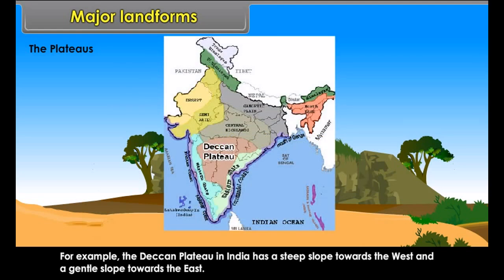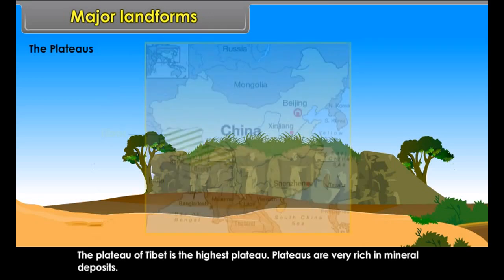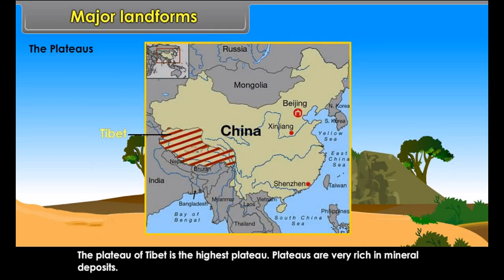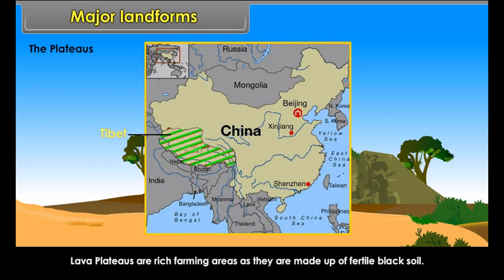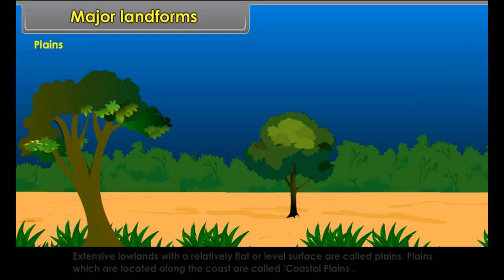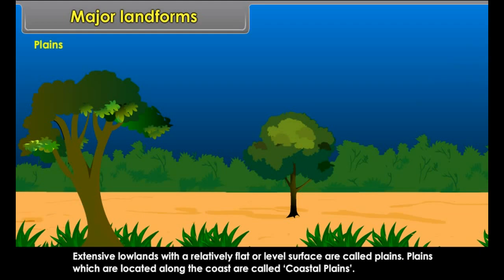The Plateaus. An extensive area of high elevation rising steeply from the surrounding lowland is a plateau. Some plateaus have steep slopes on one side only and gentler slopes on other sides. For example, the Deccan Plateau in India has a steep slope towards the west and a gentle slope towards the east. The Plateau of Tibet is the highest plateau. Plateaus are very rich in mineral deposits. Lava plateaus are rich farming areas as they are made up of fertile black soil.